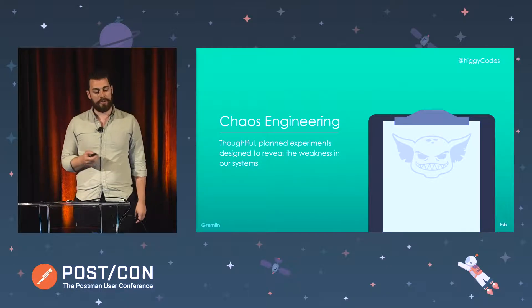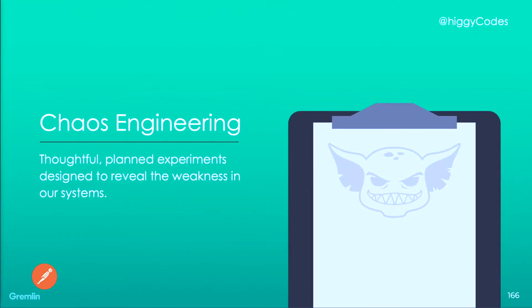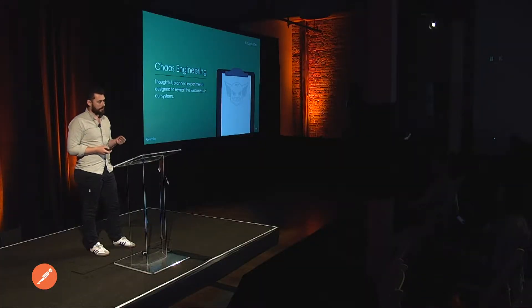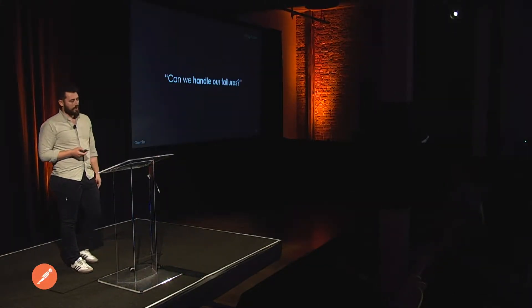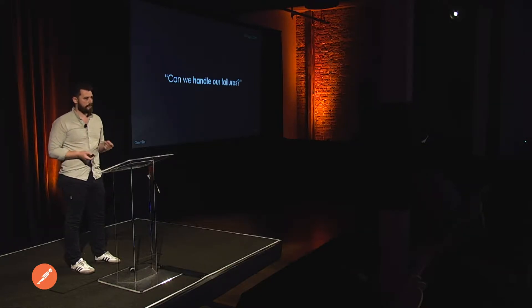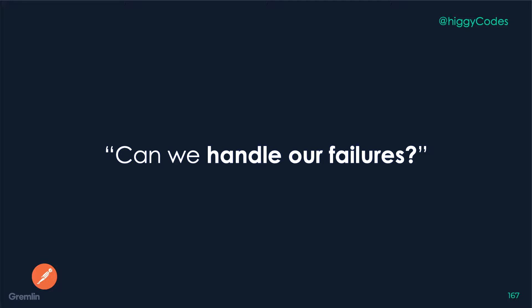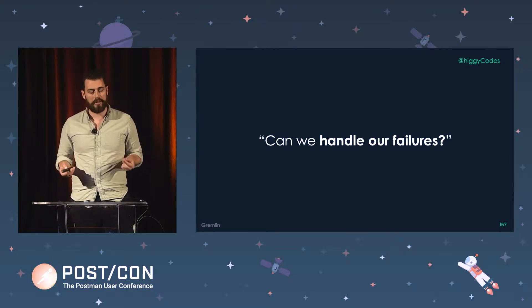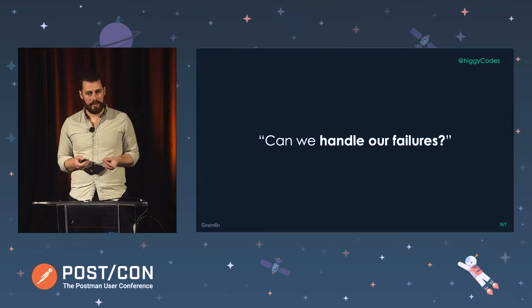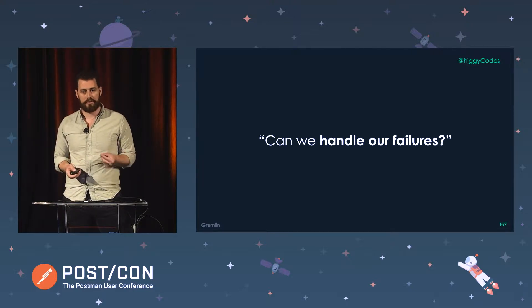It's thoughtful, planned experiments designed to reveal weaknesses in our systems. It's essentially a scientific approach, and it's an iterative approach. We want to start with a very small scope and very small impact, and be really diligent and thoughtful about where we want to inject failure in order to reveal and discover weaknesses in the larger system. What I want to really drive home today is it's not so much about the tech or the code — it's really about a cognitive shift away from thinking just about the happy path, towards embracing the potential pitfalls in our applications and systems, both technically and organizationally.